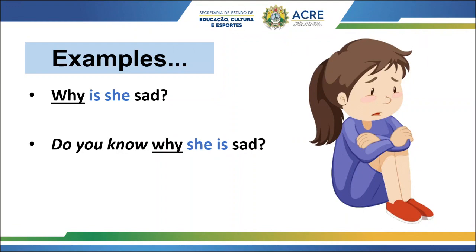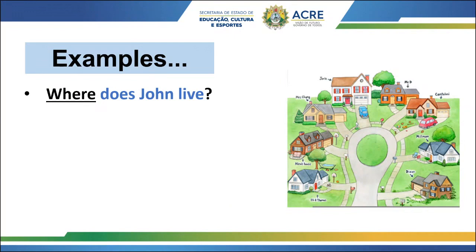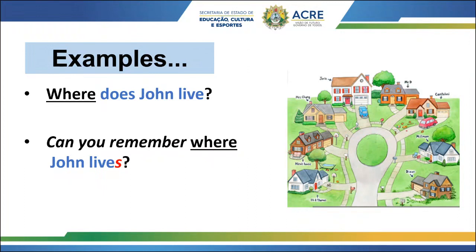'I don't know why she is sad.' Pay attention to the examples. Next: 'Where does John live?' This is a direct question. 'Can you remember where John lives?' Now we have an indirect question. Notice the verb 'lives' — in the direct question we have 'where does John live,' and now it's like the sentence is in the affirmative form of the simple present.